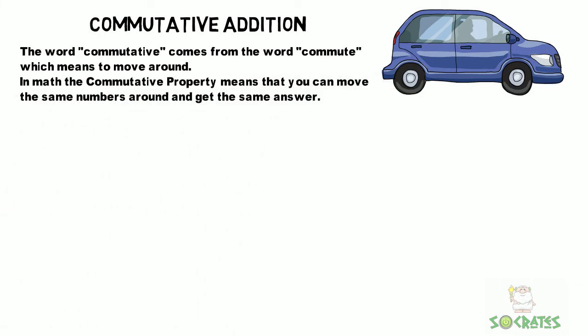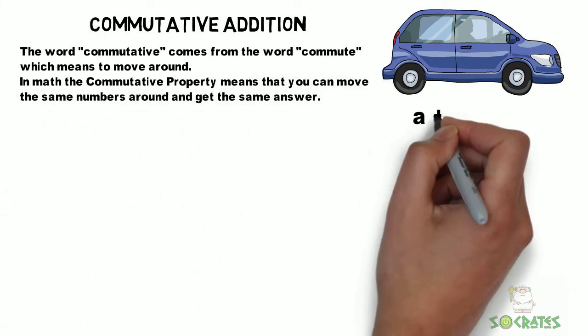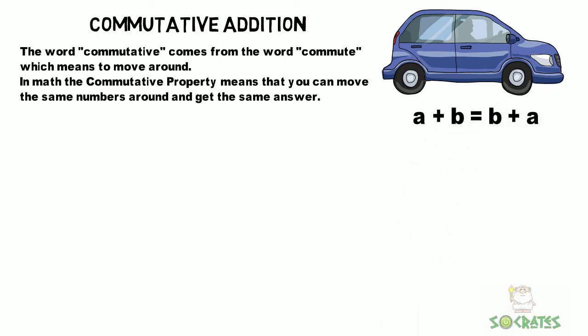In math, the commutative property means that you can move the same numbers around and get the same answer. A plus B is equal to B plus A.